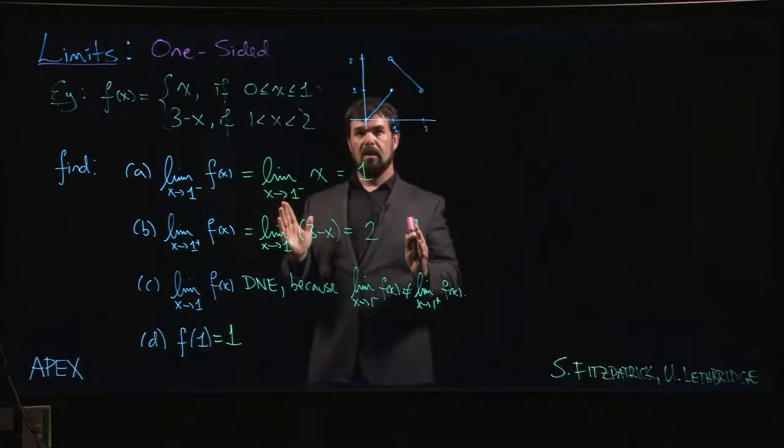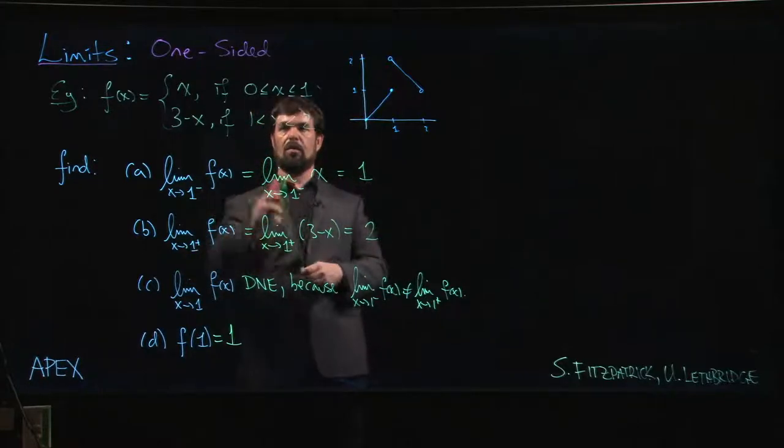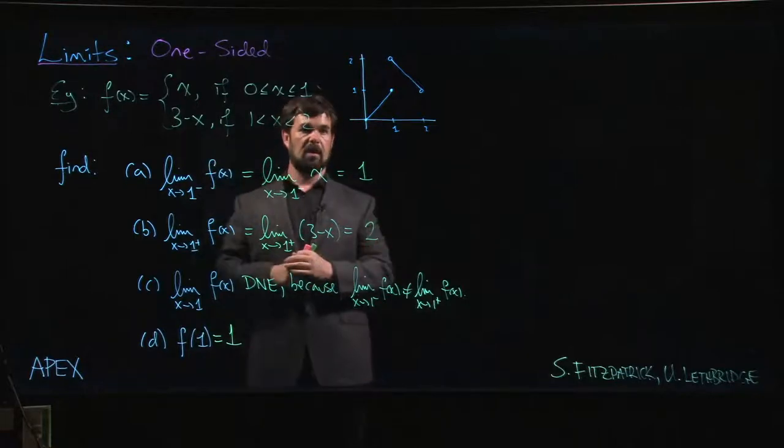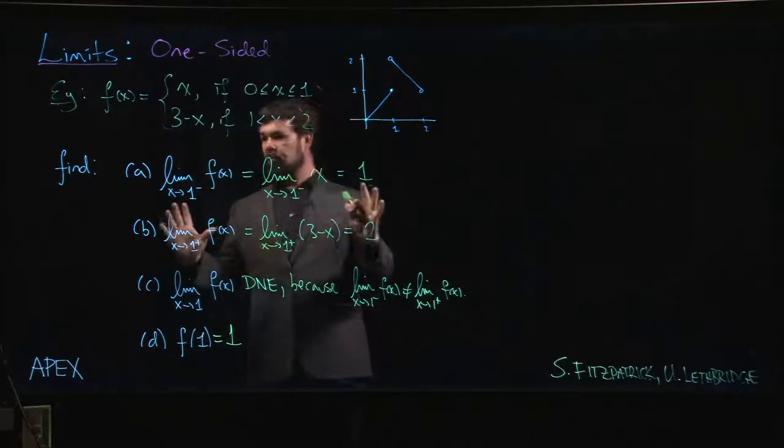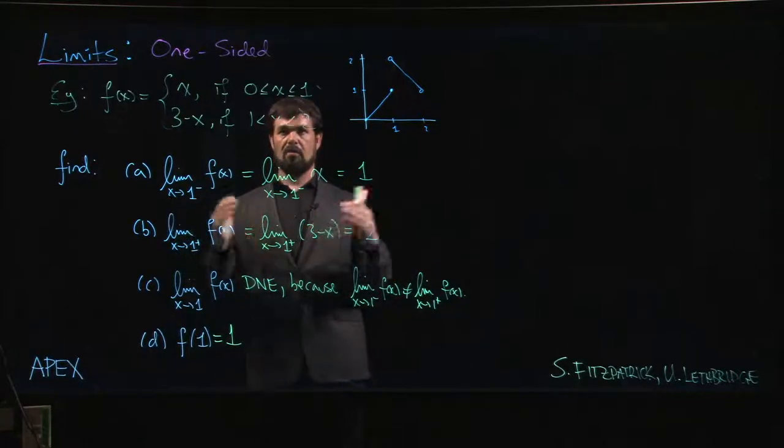We could ask about the limit as x approaches 0 from the right, and again we would do the same sort of thing. If x is approaching 0 from the right it's a bit bigger than 0, so we plug 0 into here, we get 0 for the limit. This is another scenario where one-sided limits might come up even for well-behaved functions if you have a restricted domain.